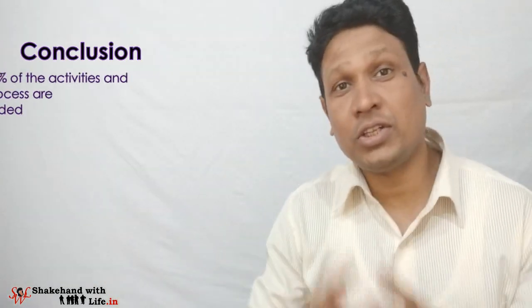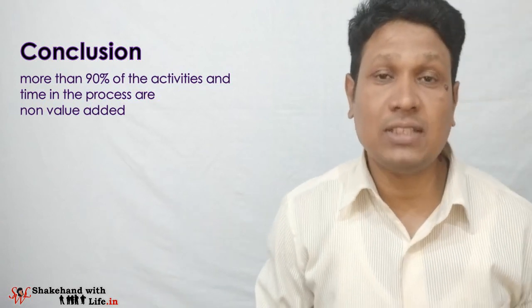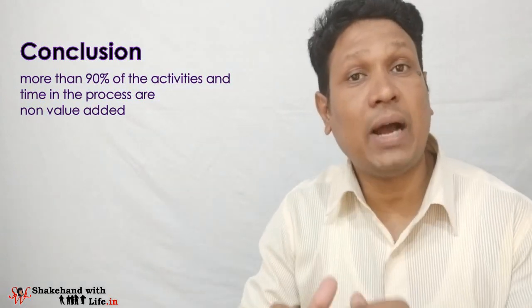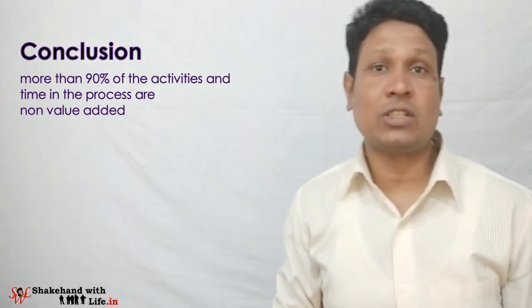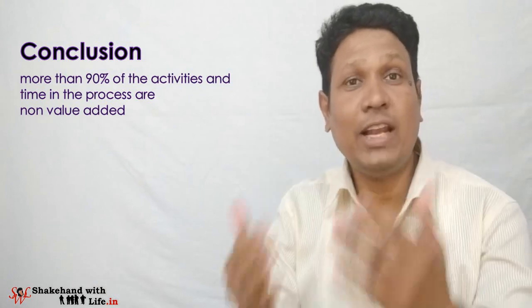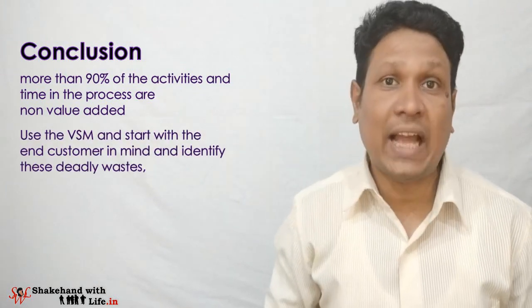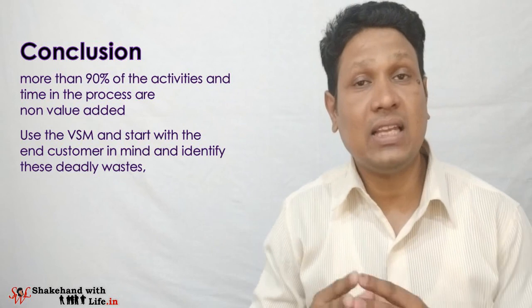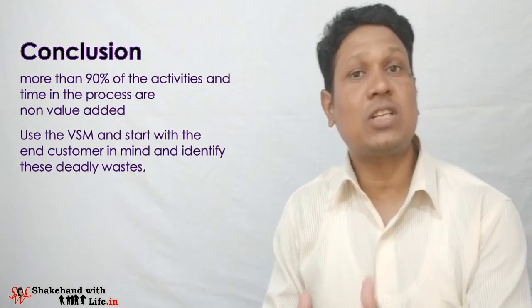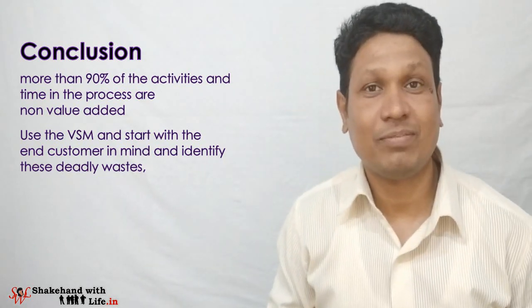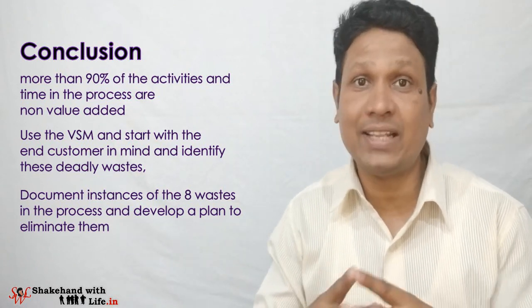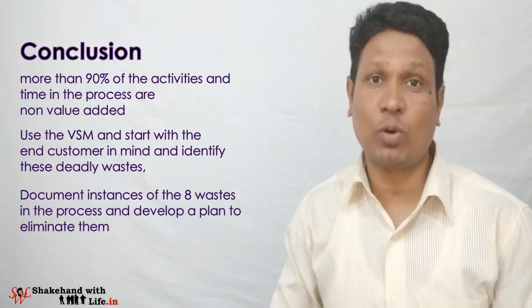In many organizations, more than 90% of the activities and time in a process are non-value-added. By eliminating these eight deadly wastes, you can increase the flow of the process and hence profitability. Use the value stream map, start with the end customer in mind, identify these eight wastes, work backwards from the end customer to the start of the production process, document the instances of the eight wastes, develop a plan to eliminate them, and hence improve your process continuously.